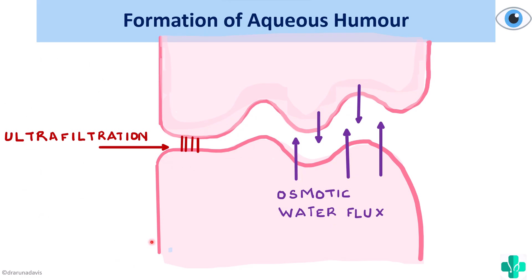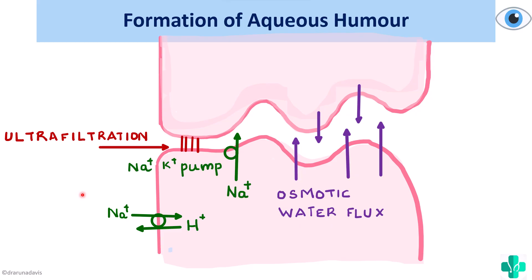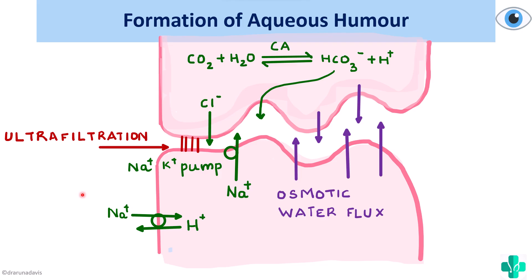Another important mechanism is ultrafiltration — fluid movement based on pressure, for example the hydrostatic pressure of the capillaries. This ultrafiltration depends on factors like Starling's forces, intraocular pressure, and capillary hydrostatic pressure. The third mechanism is active secretion, involving pumps like the sodium-hydrogen exchanger and the sodium-potassium ATPase pump. Carbon dioxide and water are converted to bicarbonate and hydrogen ions, and bicarbonate along with chloride is pumped into the aqueous humor.